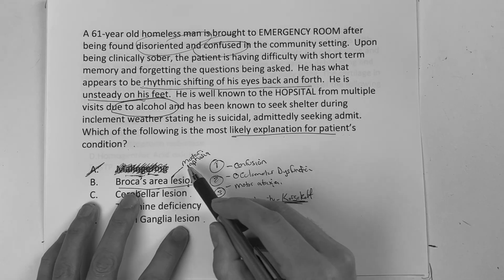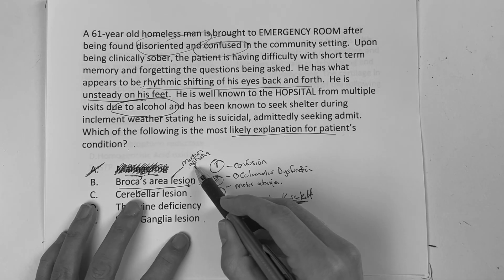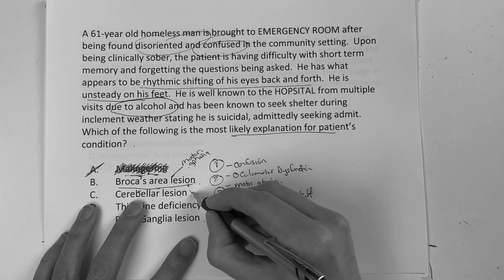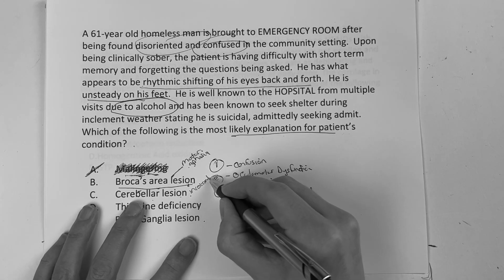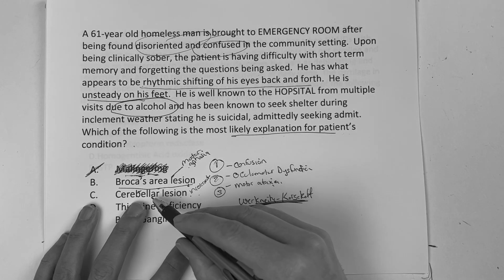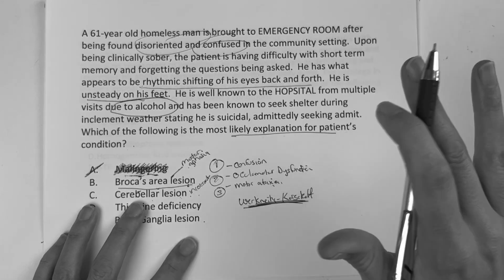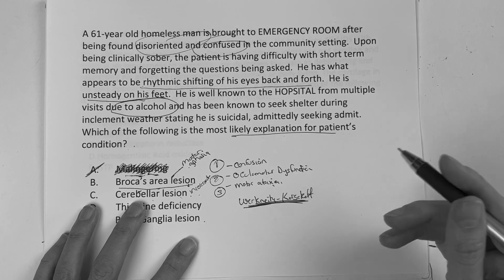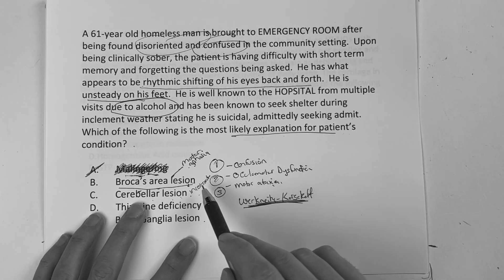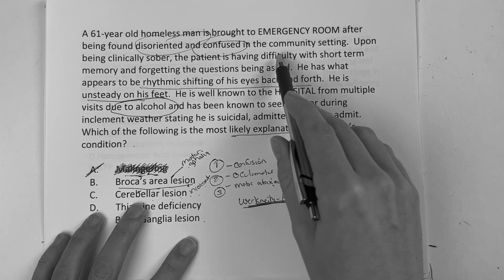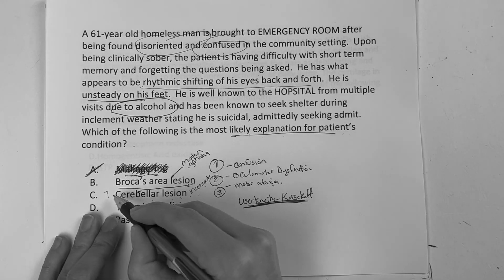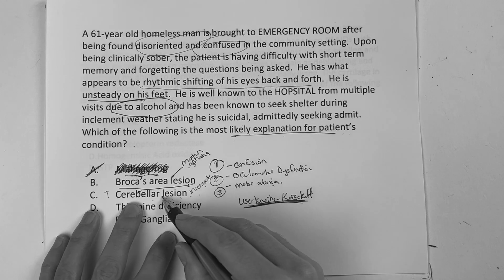Broca's area lesion — think motor aphasia. If you have a cerebellar lesion, there is incoordination of movement, the ataxia, and difficulty with rapidly alternating movements, but I don't think it quite explains the entire picture. This guy has pieces of that, but it doesn't explain everything. I don't get too excited about cerebellar lesion. And I don't see a Broca's area lesion because this guy can communicate — he's more confused than frustrated.